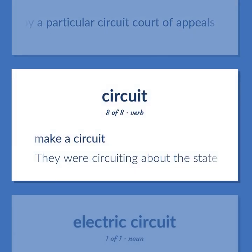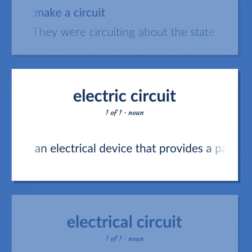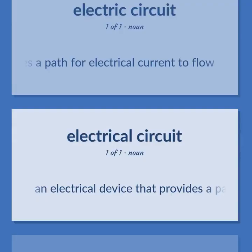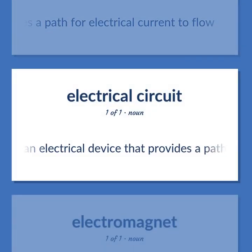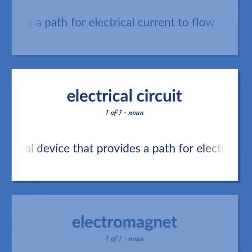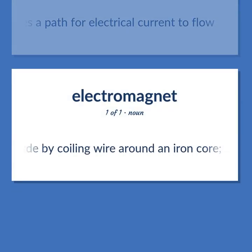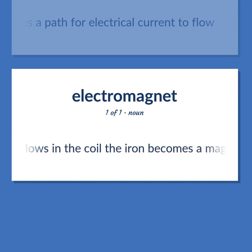Make a circuit — they were circuiting about the state. An electrical device that provides a path for electrical current to flow. A temporary magnet made by coiling wire around an iron core; when current flows in the coil, the iron becomes a magnet.